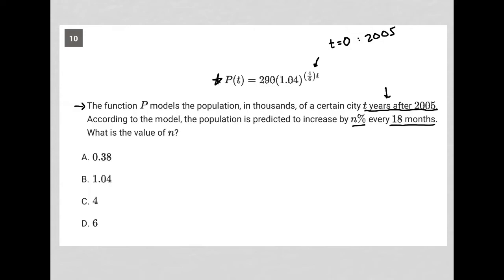So I know that t is years. So I could do quite a few things here. I could say, what happens at t equals zero? And I can also say what happens at t equals 1.5? Because 1.5 years is the same as 18 months. So let's do that.